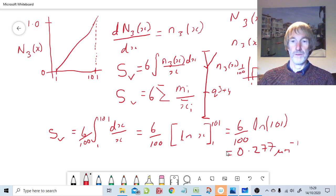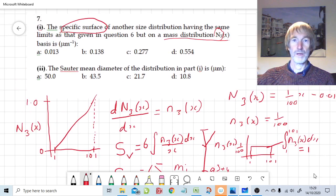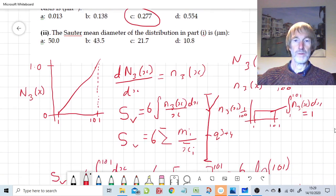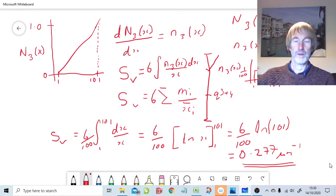Pretty simple, that's the answer. It's much easier working with mass data rather than number data. Hopefully that's one of our answers that we had. Yeah, there it is. So that's the specific surface area per unit volume of the distribution when based on the mass data.